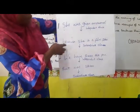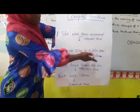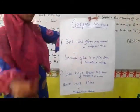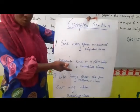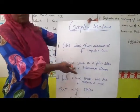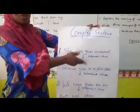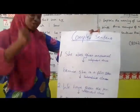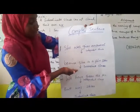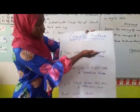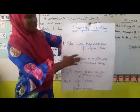Now, 'because she is a film star' — we want to know why she was given an award. The subordinate clause gives additional information to the independent clause. Though it cannot stand on its own, its role cannot be overemphasized. Because without the subordinate clause, the independent clause will not be that rich or comprehensive. Without 'because she is a film star,' you wouldn't have known why she was given an award.